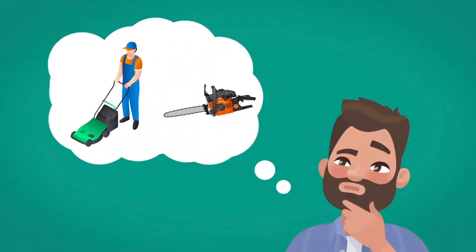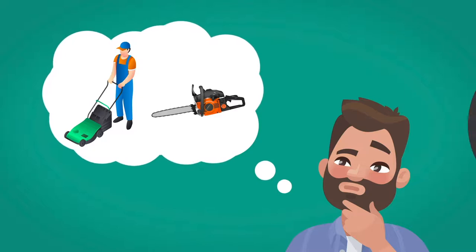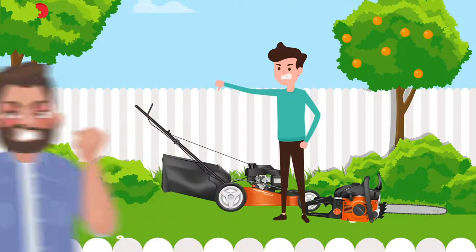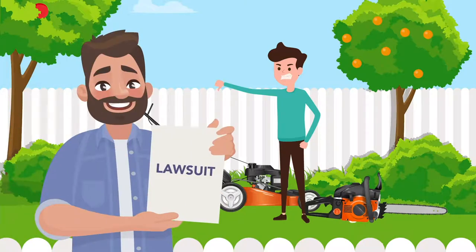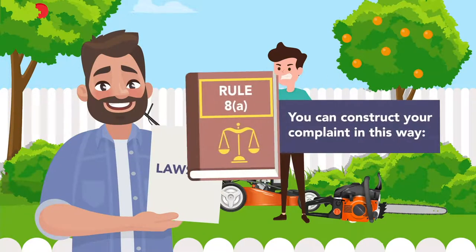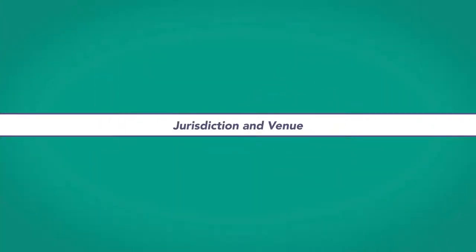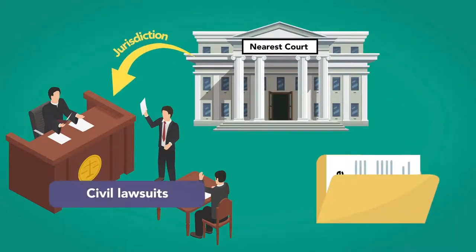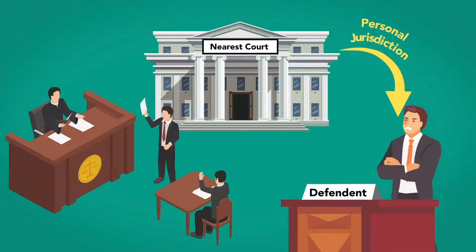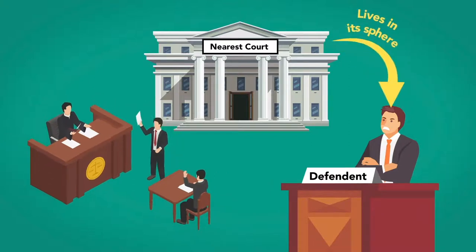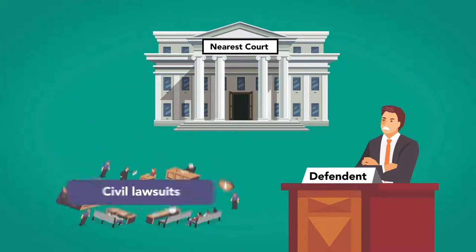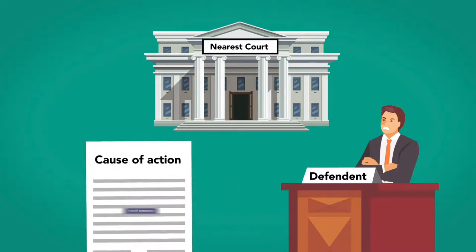Imagine that your neighbor borrowed a lawnmower and a chainsaw from you. After some time, he refused to give them back, and your relationship stopped being neighborly. You decide the only way to get your stuff back is to sue him. If you look back to Rule 8a, you can construct your complaint in this way. Jurisdiction and Venue: you should file the case in the nearest court with jurisdiction over civil lawsuits. That court would have personal jurisdiction over the defendant, and subject matter jurisdiction over the cause of action. The cause of action would be the tort of conversion.